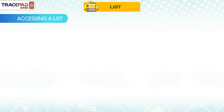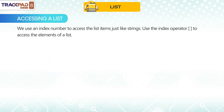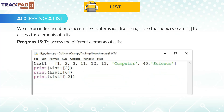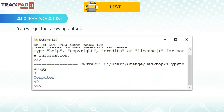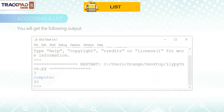Accessing a List. We use an index number to access the list items, just like strings. Use the index operator — square brackets — to access the element of a list. Program 15: To access the different elements of a list, you will get the following output.